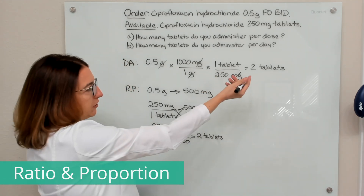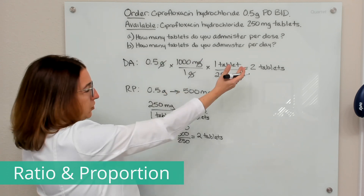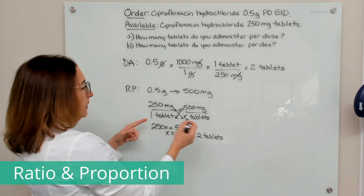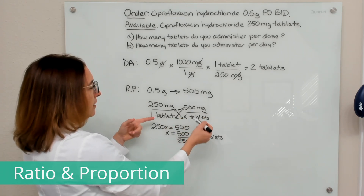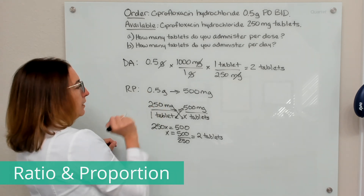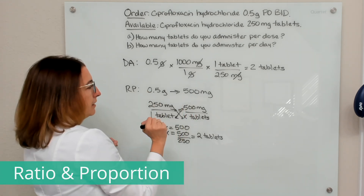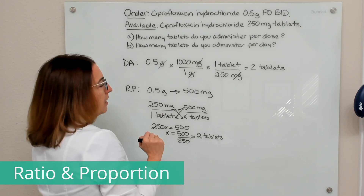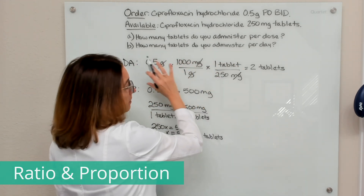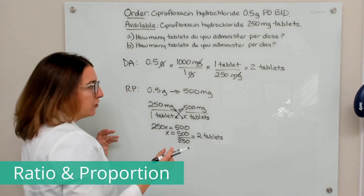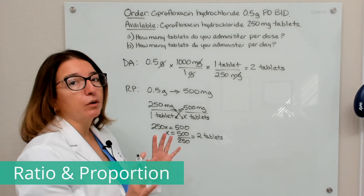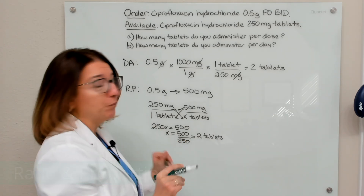You can see we got the same answer as we did with dimensional analysis — a few more steps, but you do have flexibility on how you set up your ratios. I could have had this flipped: one tablet on top and 250 milligrams on bottom, x tablets on top and 500 milligrams on bottom. You have less flexibility with dimensional analysis as far as how you set up your equation, but ratio and proportion takes more steps. You have to figure out what method makes the most sense for you.